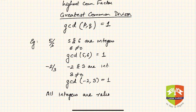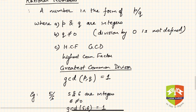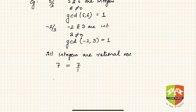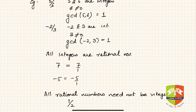Notice that all integers are rational numbers. For example, 7 can be written as 7 upon 1, and it satisfies all three conditions of rationality. Similarly, minus 5 is minus 5 upon 1. However, all rational numbers need not be integers — for example, 1 upon 2 is a rational number but it is not an integer.